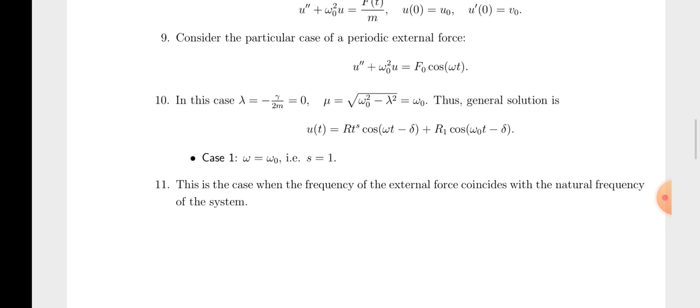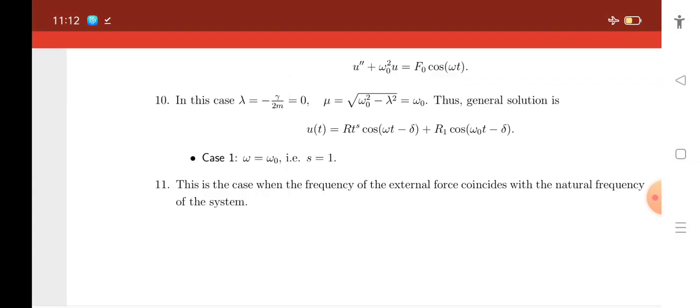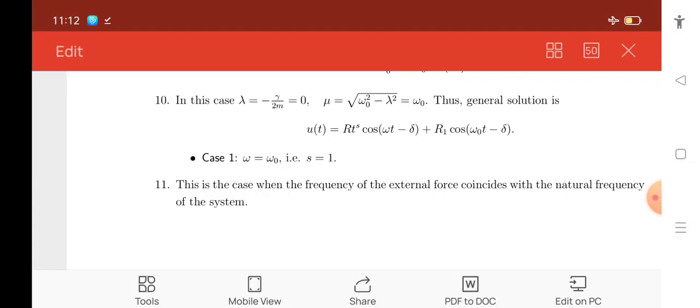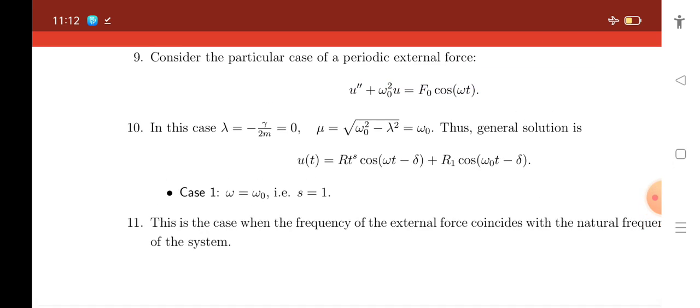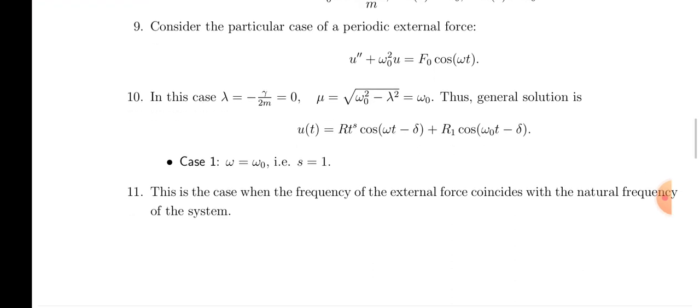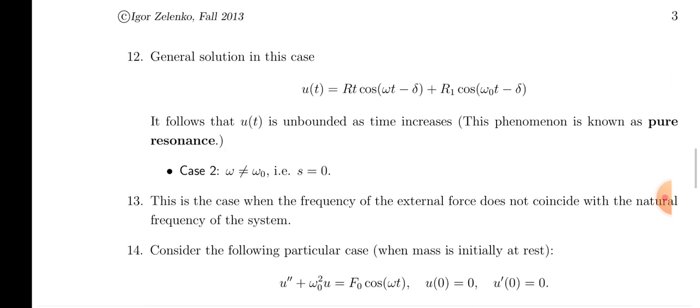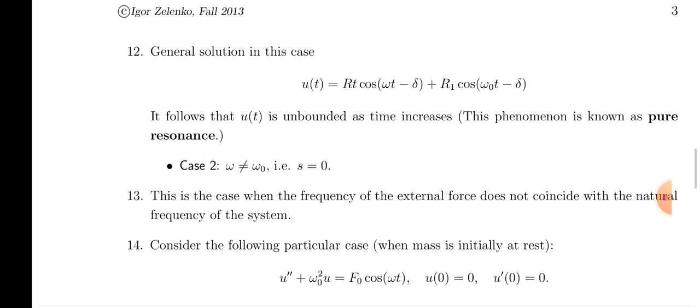For case one where λ = 0, the general solution becomes u(t) = R·cos(ωt − φ) + R₁·cos(ωt − φ). This solution is unbounded as time increases — this is the condition of pure resonance.